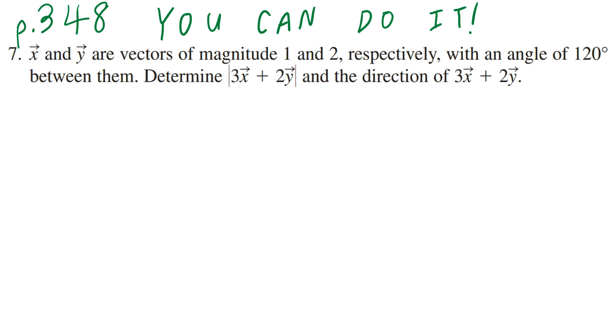Hi everyone, let's take a look at number 7 on page 348. Vector x and vector y are vectors of magnitude 1 and 2, respectively, with an angle of 120 degrees between them. Determine the magnitude of 3 times vector x plus 2 times vector y and the direction of 3 times vector x plus 2 times vector y.